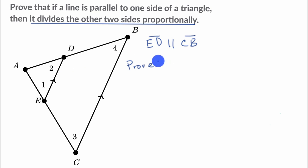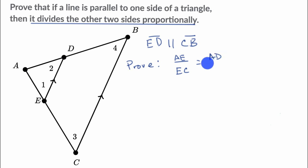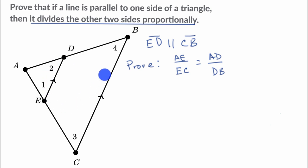Another way to say that it divides the other two sides proportionately — if we look at this triangle — it would mean that the length of segment AE over the length of segment EC is going to be equal to the length of segment AD over the length of segment DB. This statement and what was said above are equivalent, given this triangle.